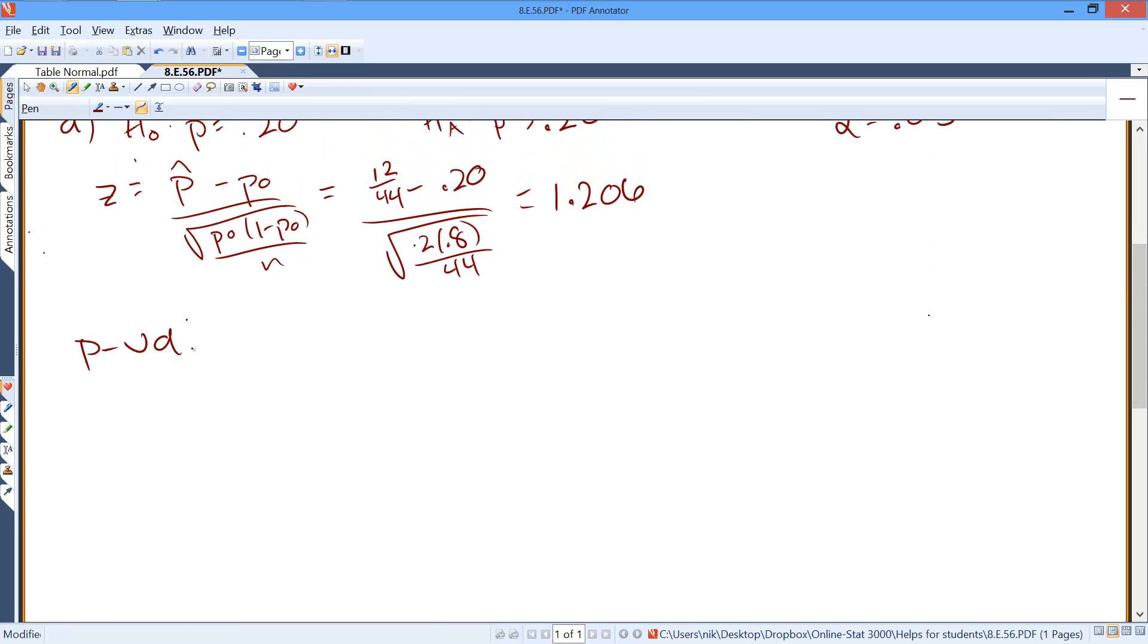So we get 1.206. And you're looking through the table because it's a greater than alternative hypothesis, where you put the alpha in the right tail. And you have to use the z-table because it was a z-test statistic.